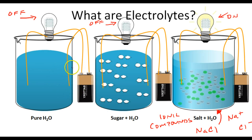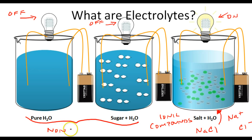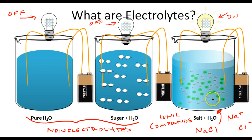So these two — pure H₂O and sugar water — are non-electrolytes. Over here, you're going to have an electrolyte, a solution that can conduct an electric current. Whenever you have an ionic compound and it dissolves in water, it's going to dissociate and produce positively and negatively charged ions floating in that solution.